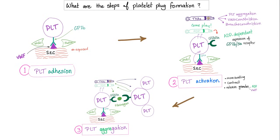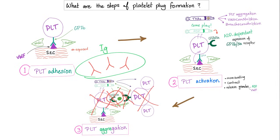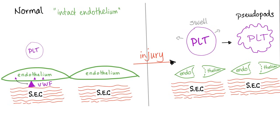What are the steps of primary hemostasis? First platelet adhesion, then activation, then aggregation. In immune thrombocytopenic purpura, we have IgG antibodies against GP2B3A. When you inhibit this receptor, platelets will not be able to aggregate with each other. The antibody is IgG, and therefore it can cross the placenta. Let's go through the phases of the platelet plug. Normally, with an intact endothelium, the platelet is just cruising through the bloodstream.